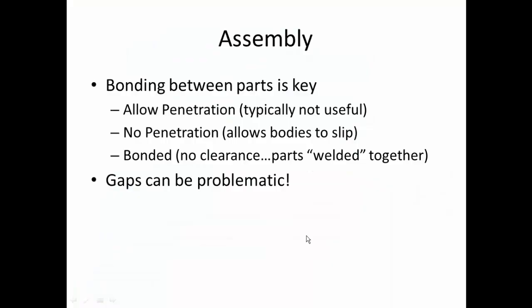Assembly FEA key points: bonding is the critical parameter. Use no-penetration for parts that slip; use bonded for welded interfaces. Add actual weld bead geometry and bond it to both parent parts. Gaps between surfaces are problematic — all touching surfaces must be in contact.